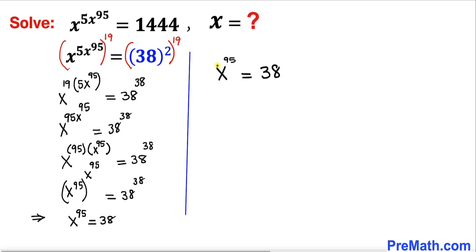And now we are going to solve for x. So therefore I'm going to take power 1 over 95 on this side and power 1 over 95 on this side as well. And here on the left hand side, 95 and 1 over 95 cancel each other out. So we ended up with x power 1 equals to 38 power 1 over 95.